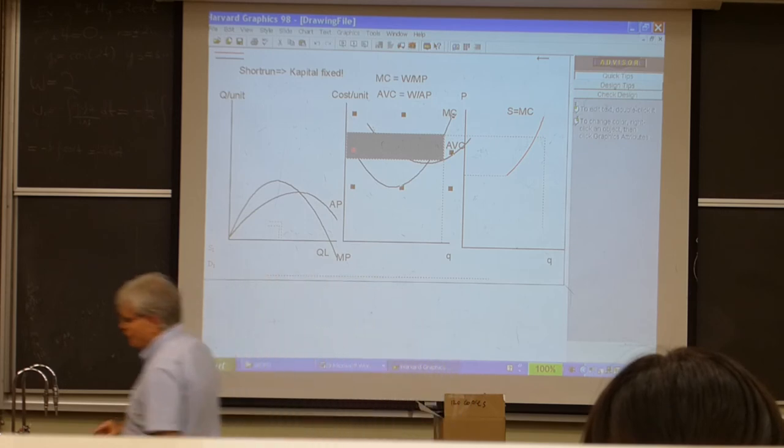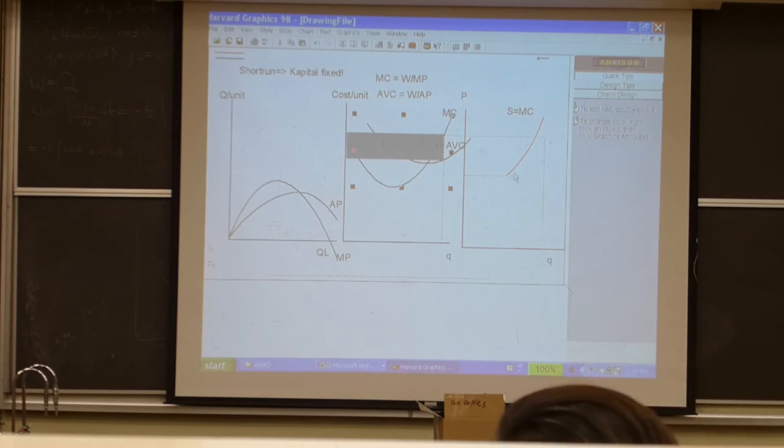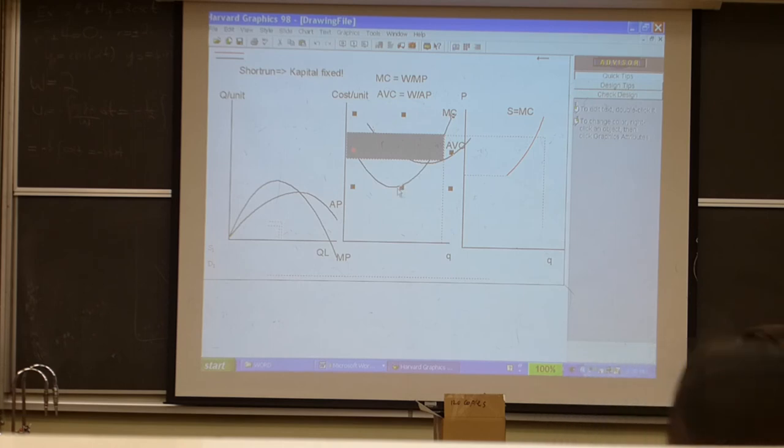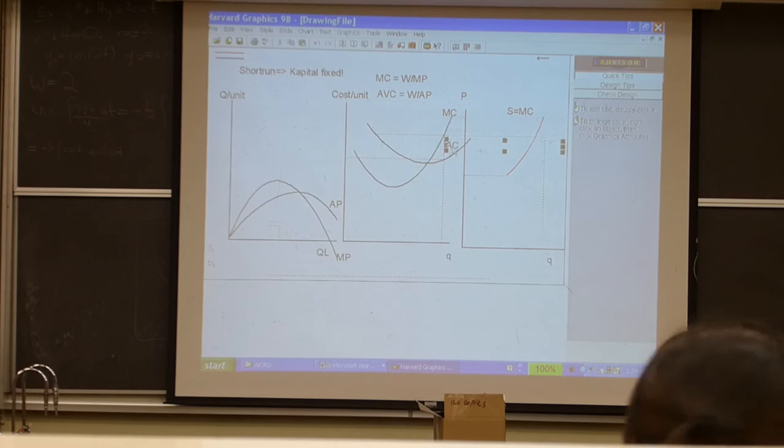This is the background. It turns out the supply function for an individual firm is the marginal cost function above minimum average variable cost. We're not going to draw this tail anymore. We're going to stop it right here. When I gave you this demonstration of profit, I was treating this as if it was average cost. But with average variable cost, the supply function is above minimum average variable cost.